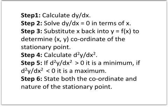To find and classify the stationary points of a curve, we're going to go through a six step process. The very first thing we're going to do is calculate dy/dx. We're then going to solve the equation dy/dx equals zero, because stationary points occur when a curve has a gradient of zero. Then we need to find the coordinate of the stationary point — we've found its x value in step two, but to find its y value we need to substitute x back into the original function. We then calculate the second derivative, d²y/dx², and that will allow us to classify the stationary point. If d²y/dx² is greater than zero, the stationary point is a minimum.